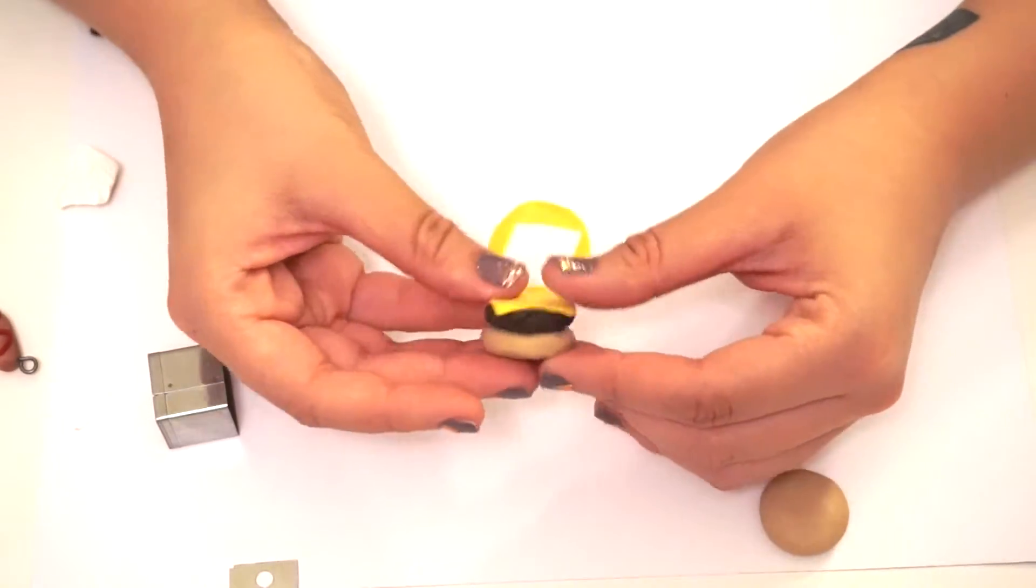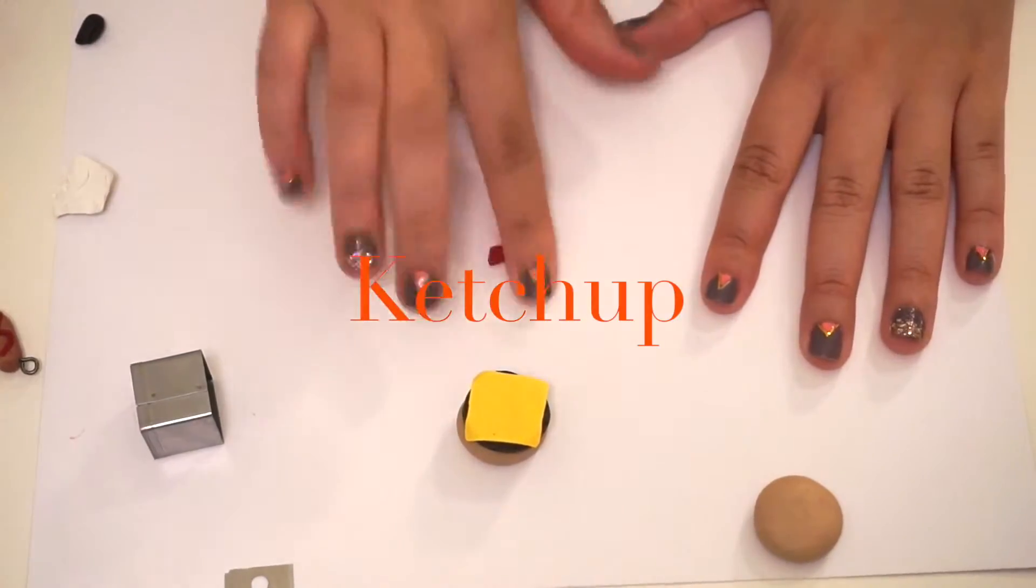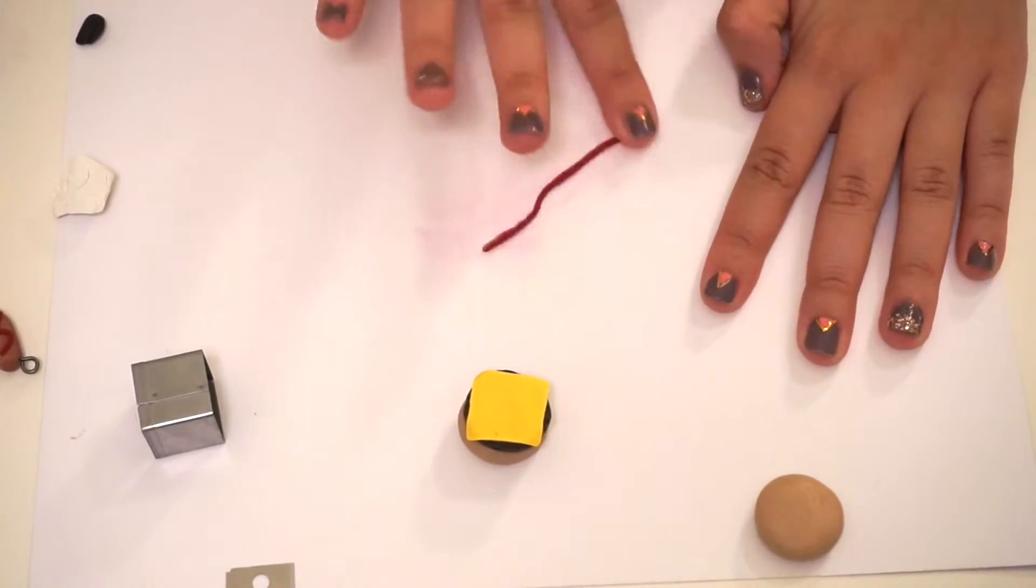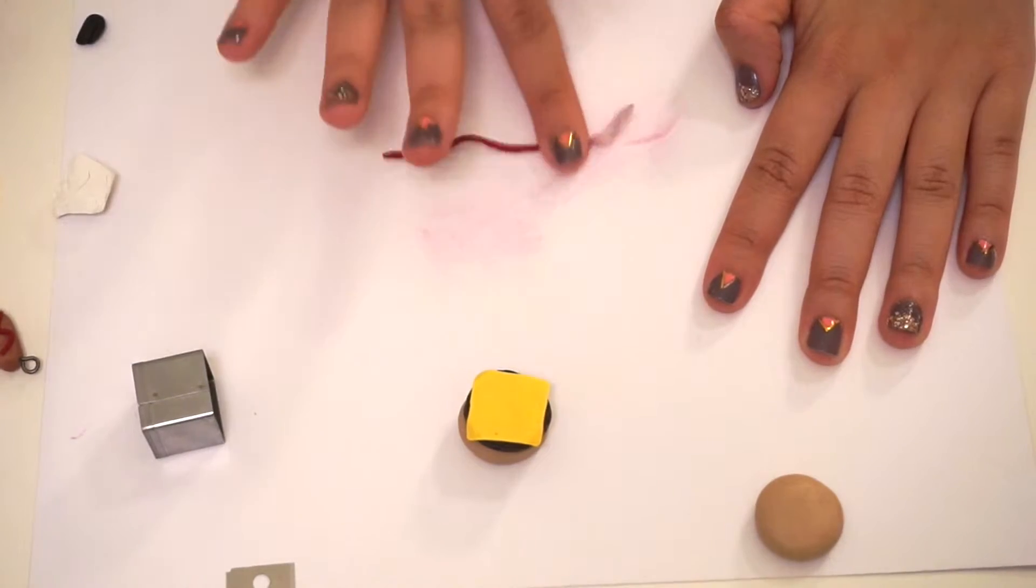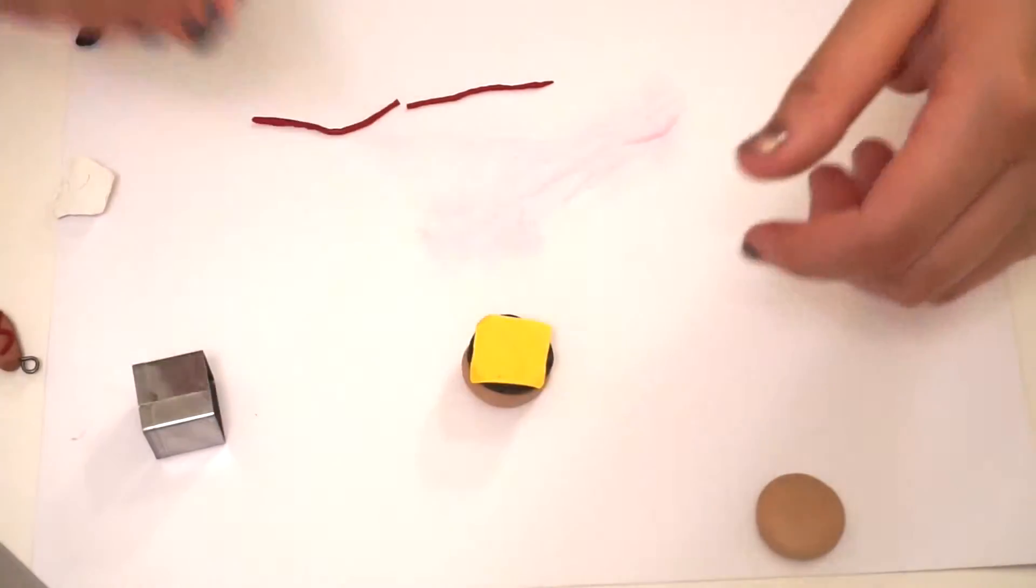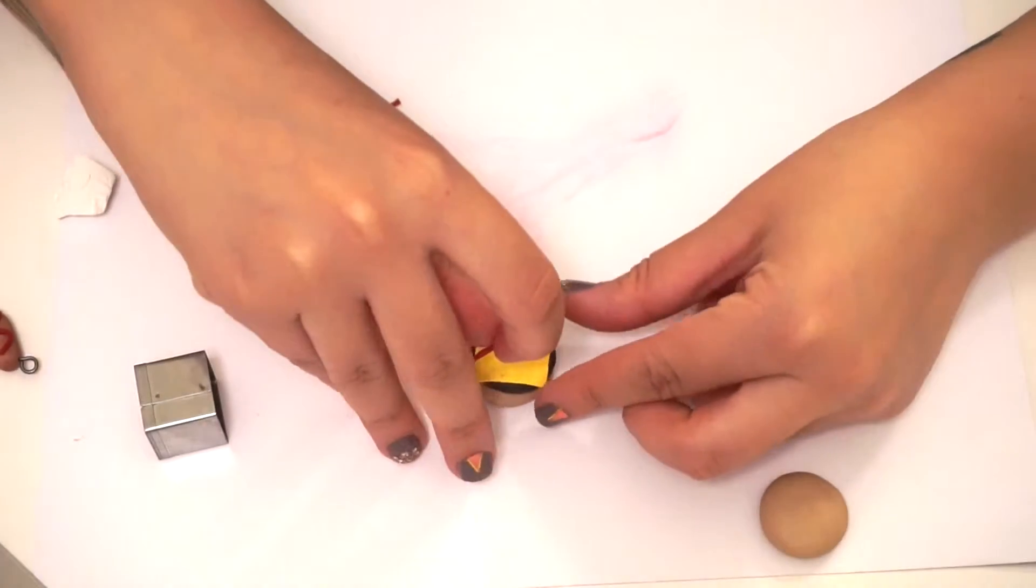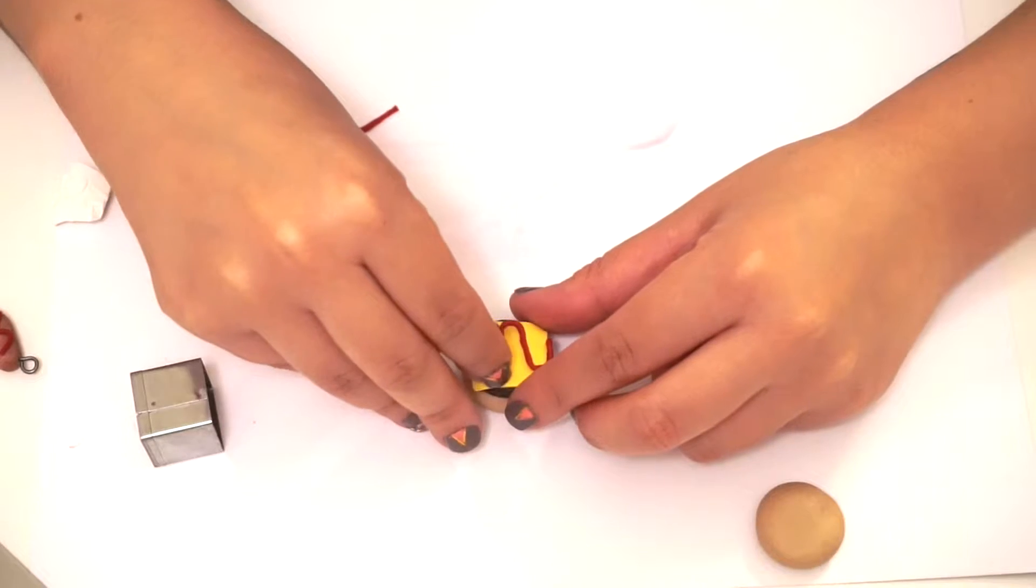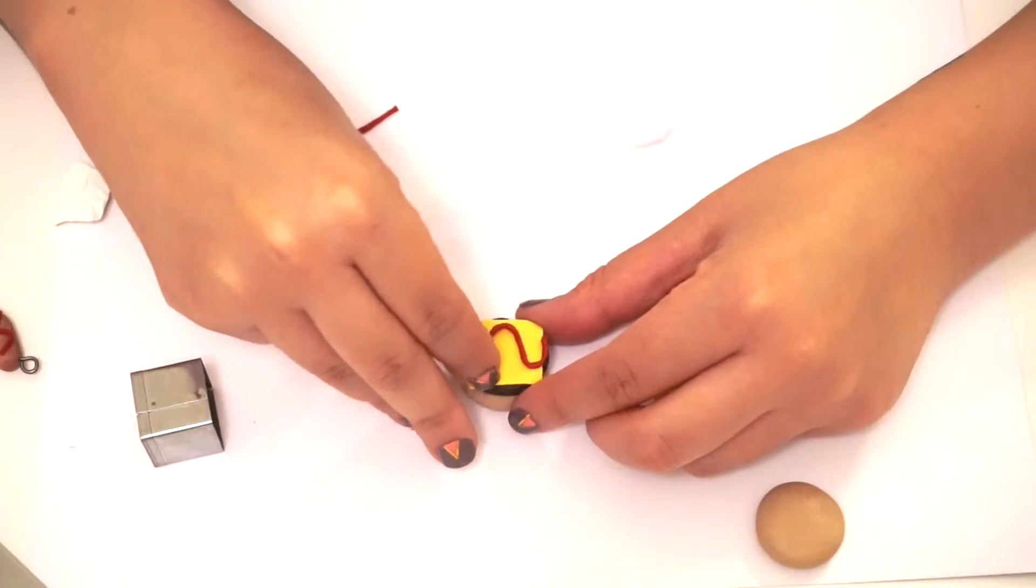Then the ketchup is super easy. You're going to roll out a snake and after you roll out your snake, you're just going to cut it and spread it out just like a squirt of ketchup on a burger. And I'm so sorry, my voice sounds terrible guys. I'm getting over a cold. So if I sound measly or weird, that is why.